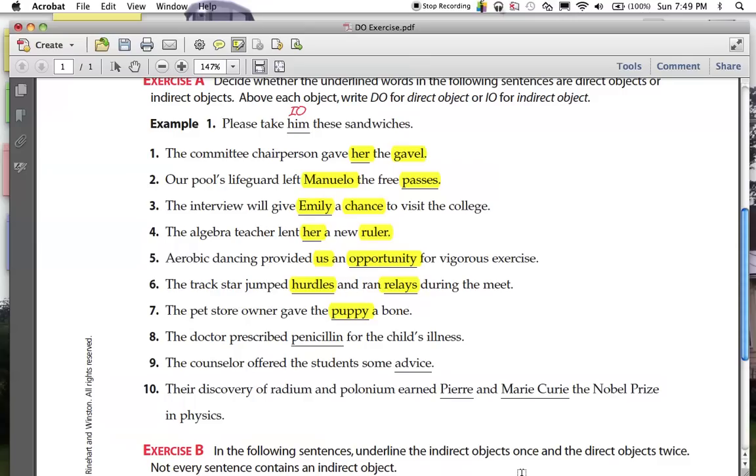The doctor prescribed penicillin for the child's illness. What did the doctor prescribe? He did not prescribe both of those. Just penicillin. Direct object. Number nine, counselor offered some advice. So that is a direct object. Who did he offer that advice to? Or for students. Indirect objects.